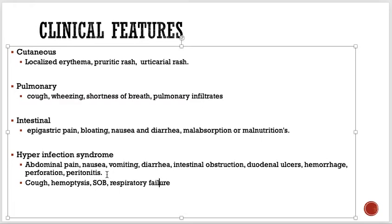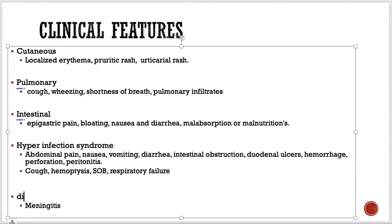In disseminated infection, the parasite can reach other parts of the body such as the brain, leading to meningitis, pneumonia, and other widespread complications. The parasite enters the skin, reaches the lungs, then the intestine, and if the parasite load is too high, hyper-infection syndrome develops.